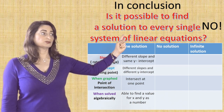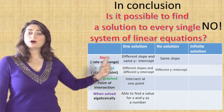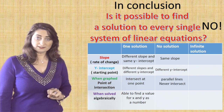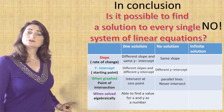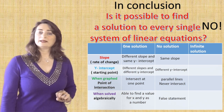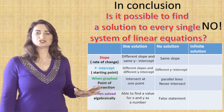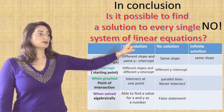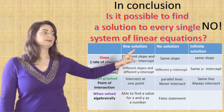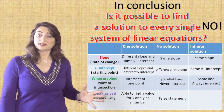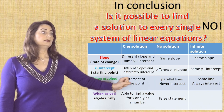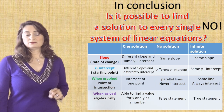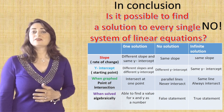For no solution: if the slope is the same and the y-intercept is different, the two lines are parallel — they will never intersect — and when solved algebraically, you get a false statement. That means no solution, never. For infinite many solutions: if the slope is the same and the y-intercept is the same, it's the same line — the lines always intersect — and when solved algebraically, you get a true statement. That means infinite many solutions, always.